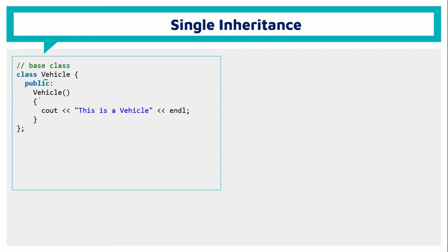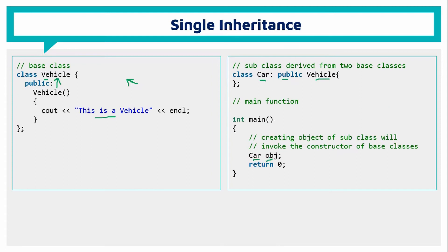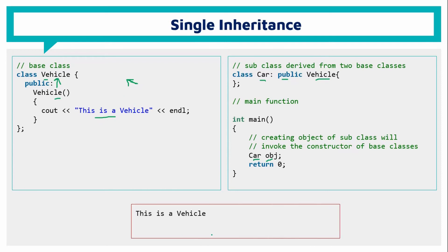For the single inheritance program, we create a class named Vehicle with a name type. We use the name type of the vehicle. Then we create a child class that inherits the vehicle class, setting the access mode to public and specifying the vehicle as the base class.